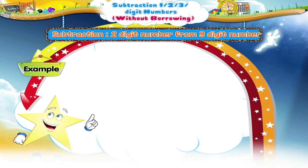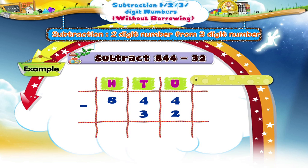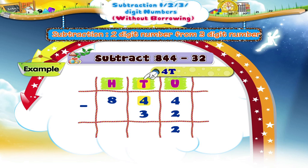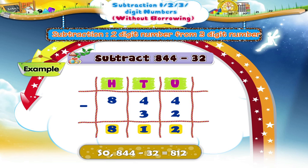Let us try another example: 844 minus 32. Now, 4 units minus 2 units equals 2 units. Write 2 in the units place of the difference. And 4 tens minus 3 tens equals 1 ten. We write 1 in the tens place. We write 8 in the hundreds place. So the answer is 812.